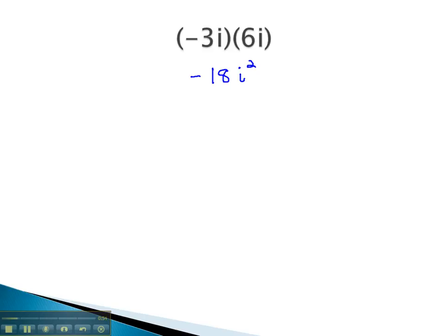The only time i is really different is when we have this i squared factor. We can treat this i squared factor as a factor of negative 1. This is really negative 18 times negative 1, which is now positive 18.